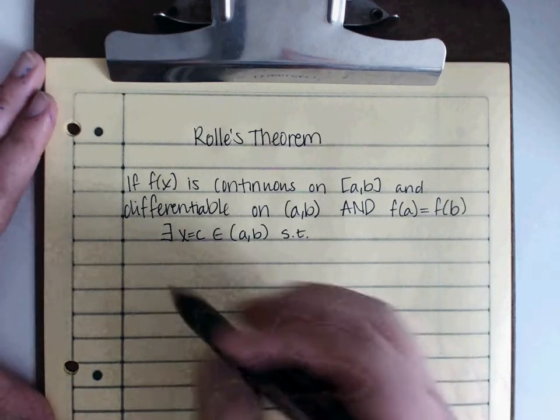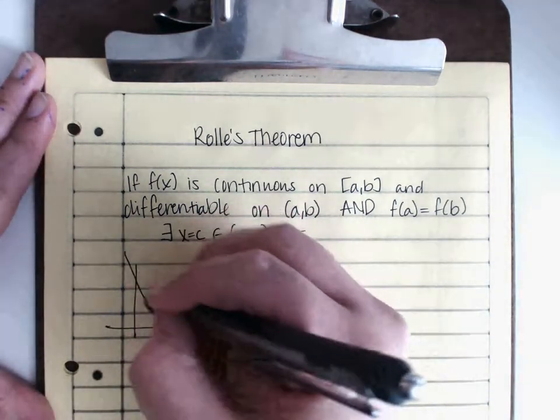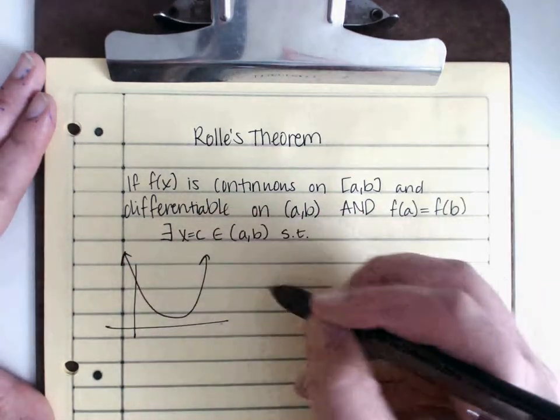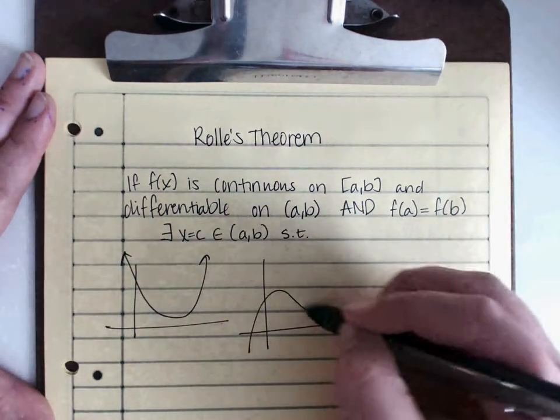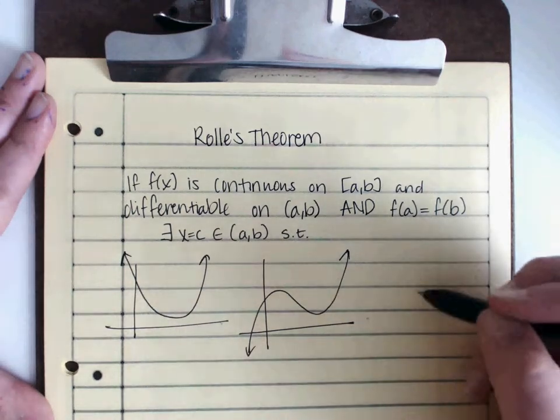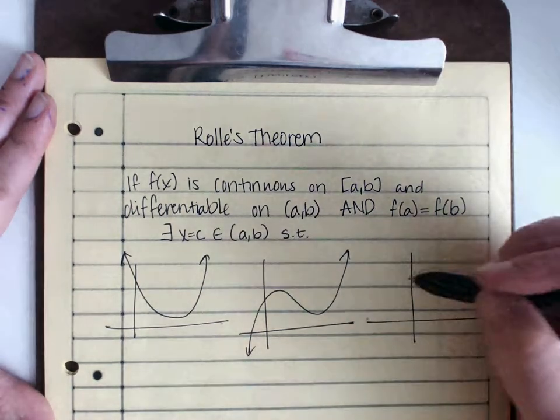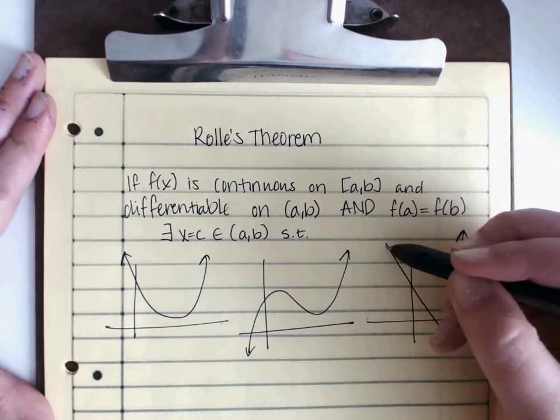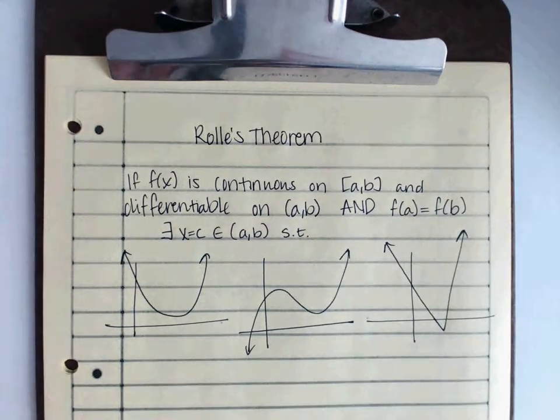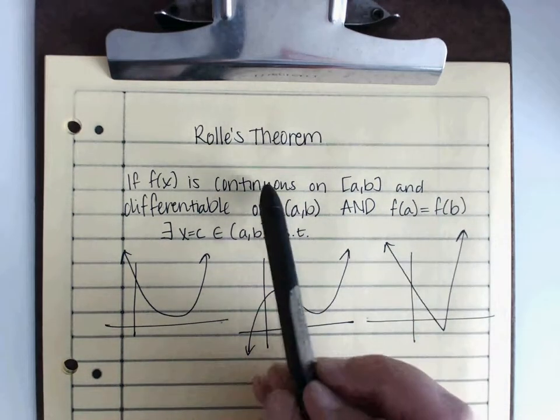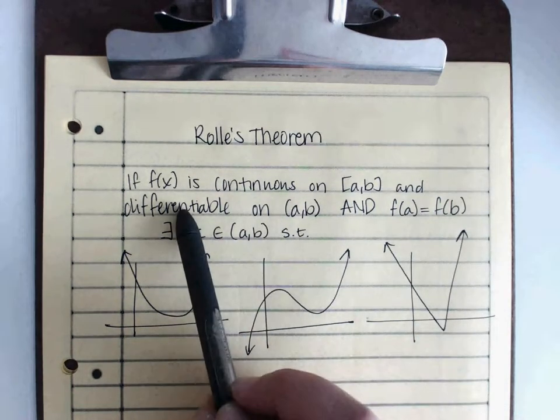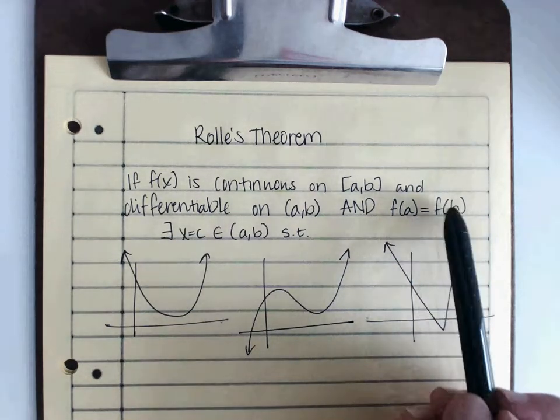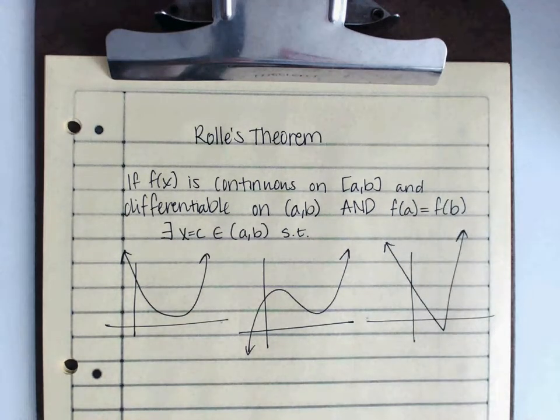If you remember yesterday, we drew a quadratic, we drew a cubic, and we drew an absolute value. Now remember, for these graphs, they're continuous, they're differentiable. But I have to pick my a and my b on my interval to be equal to each other.